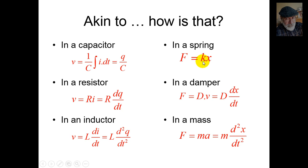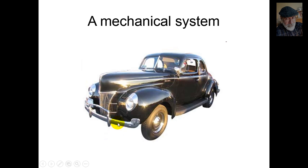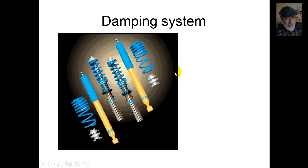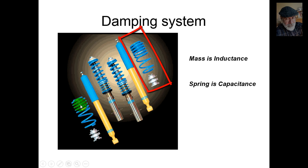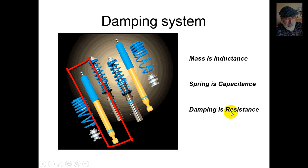The Hooke constant K is actually the inverse of capacitance in the mechanical system. A damper's D coefficient is the resistance of a mechanical system. And Newton's mass is the inductance. Let's have an example: the damping system of a car. In it, we see immediately the inductance — the mass of the car. The system has capacitance in the springs under the fenders, and the damping resistance is provided by the dampers behind the wheels.